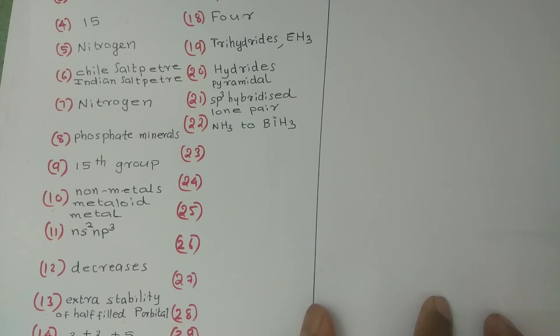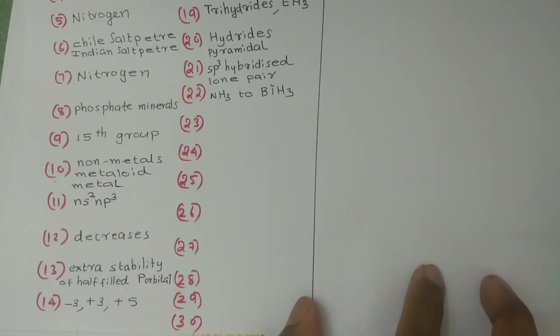19th group answer: 13. The answer is non-metals. 2 — metalloids, 13 — meter. 11 — Ns²Np³. 12 — decreases. 13 — extra stability of half-filled p orbital.